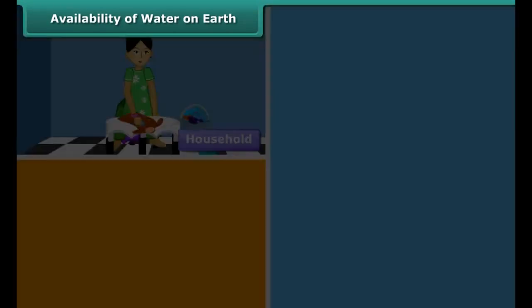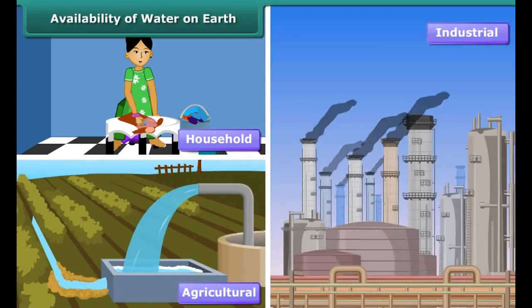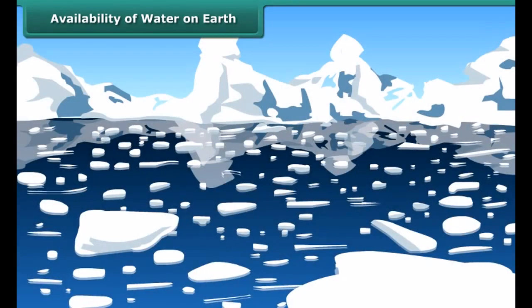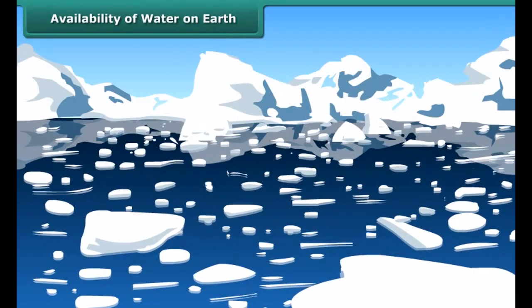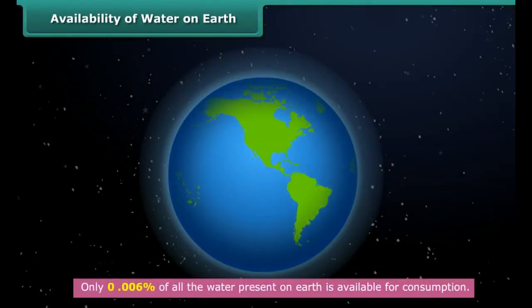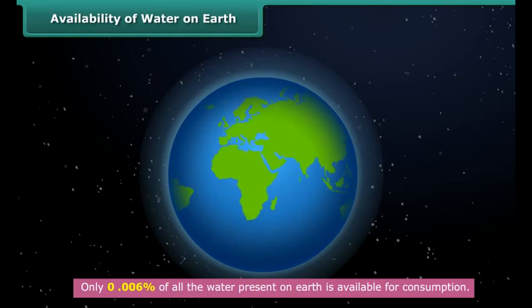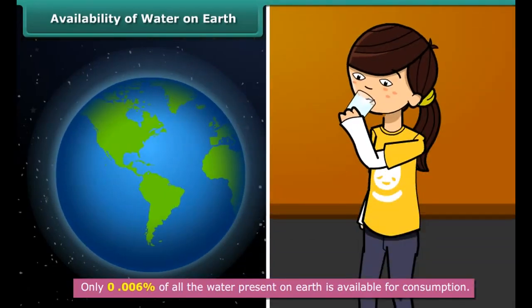hence it is fit neither for household consumption nor for agricultural and industrial use. The remaining 3% is freshwater, two-thirds of which is frozen in glaciers and polar ice caps. Only 0.006% of all the water present on earth is available for consumption.